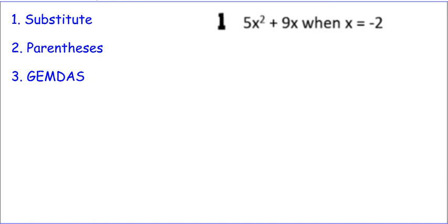Let's look at some examples. Remember, we're going to substitute, use parentheses, and then use our friend GEMDAS. So 5x squared plus 9x when x is negative 2.